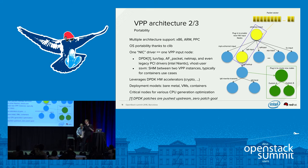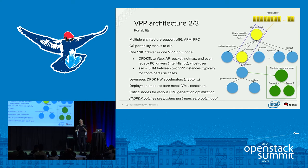A nice trick from VPP: critical nodes like the IP lookup table are compiled with various CPU optimization options. If your CPU is an older version, it will work. But if you have the latest AVX v3, there is an optimized lookup function that will dynamically be used. You don't need different VPP versions — one VPP version can work on both older and latest greatest CPUs. That's very practical.